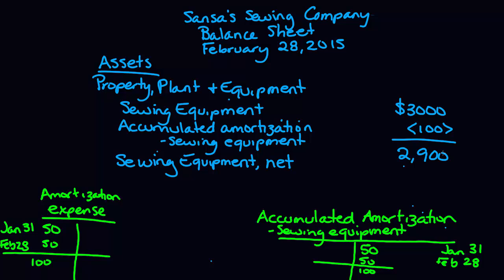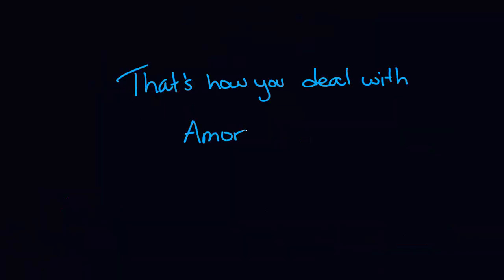The sewing equipment account itself doesn't change until we actually sell the asset, or until it's completely used up and we have to dispose of it. And that is how you deal with amortization. Thanks for watching!